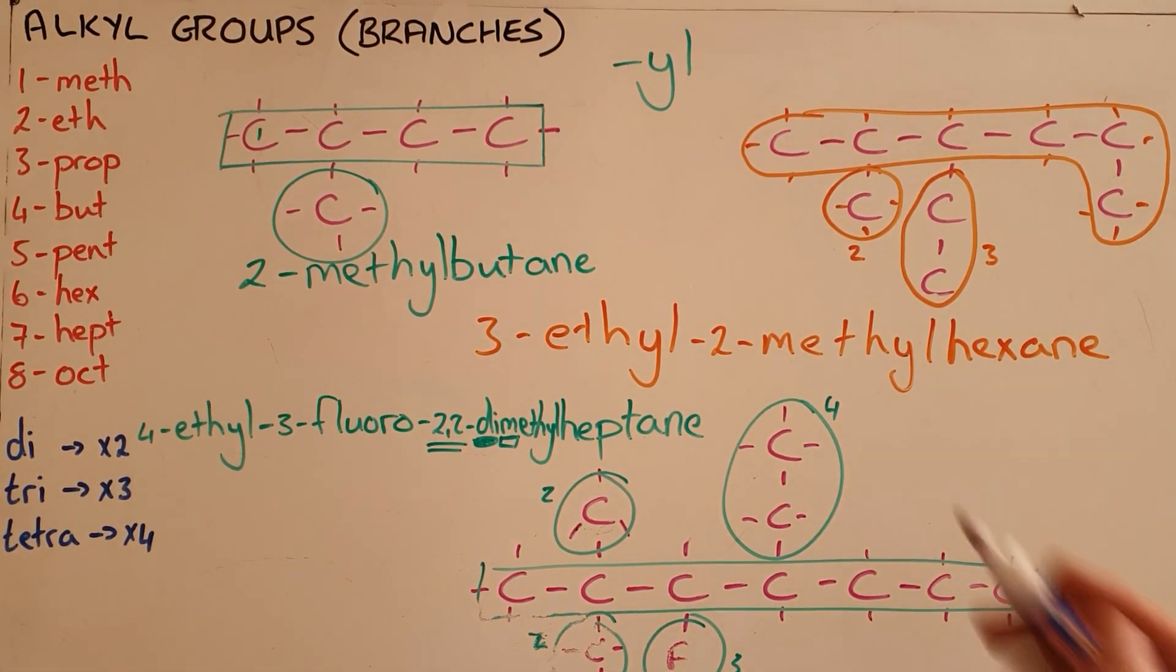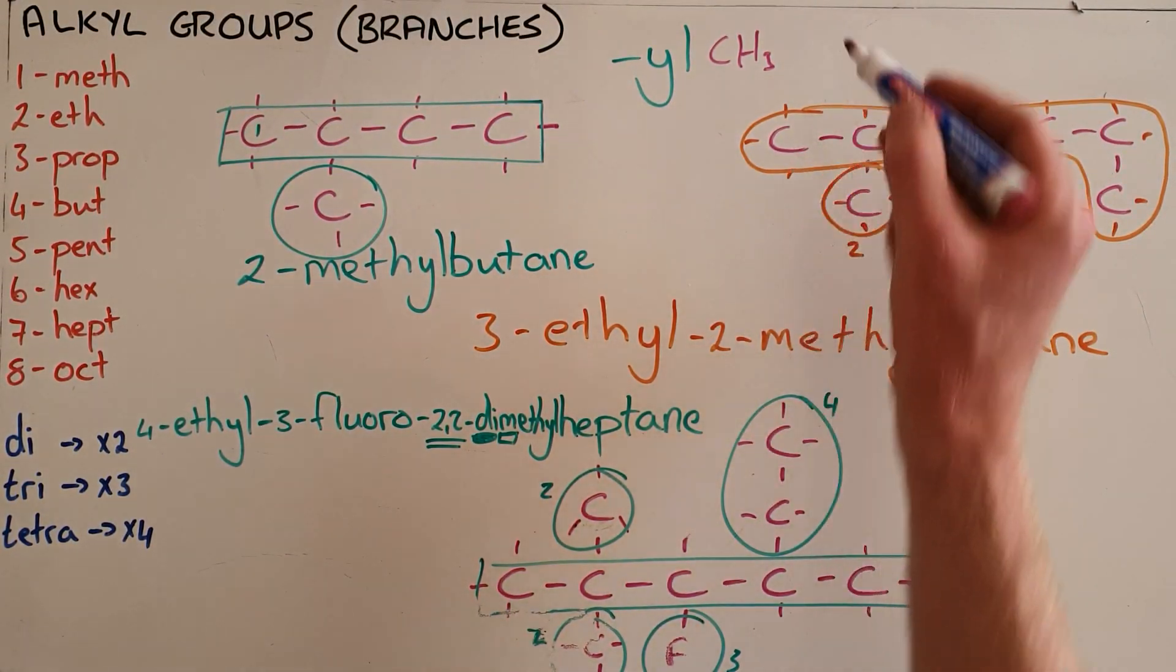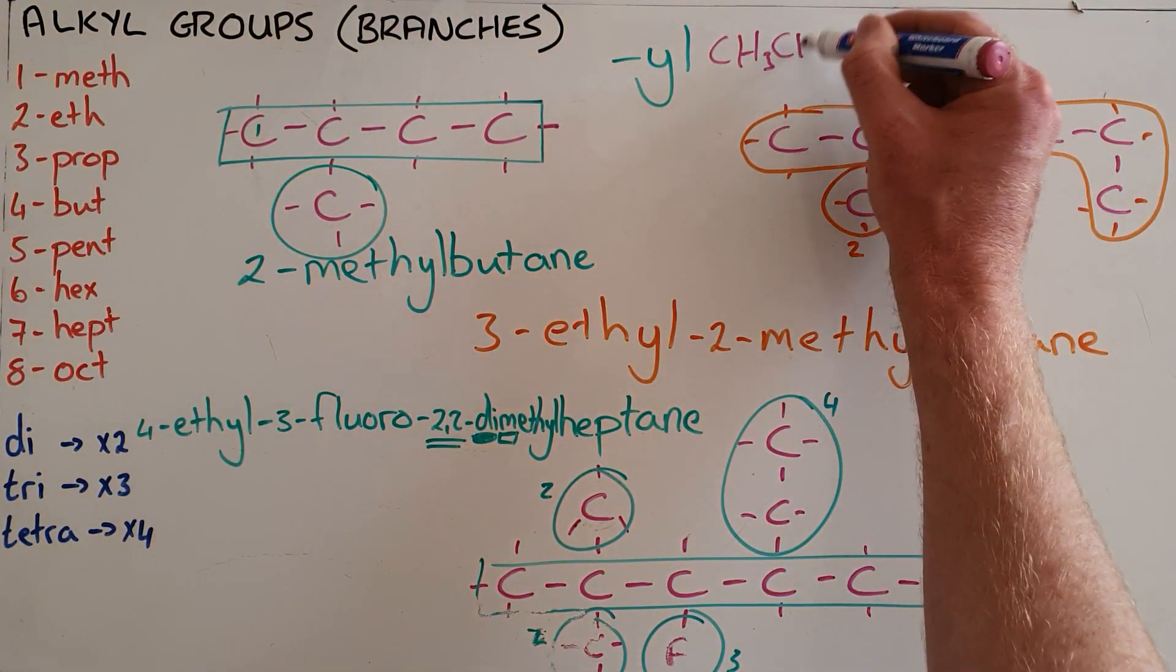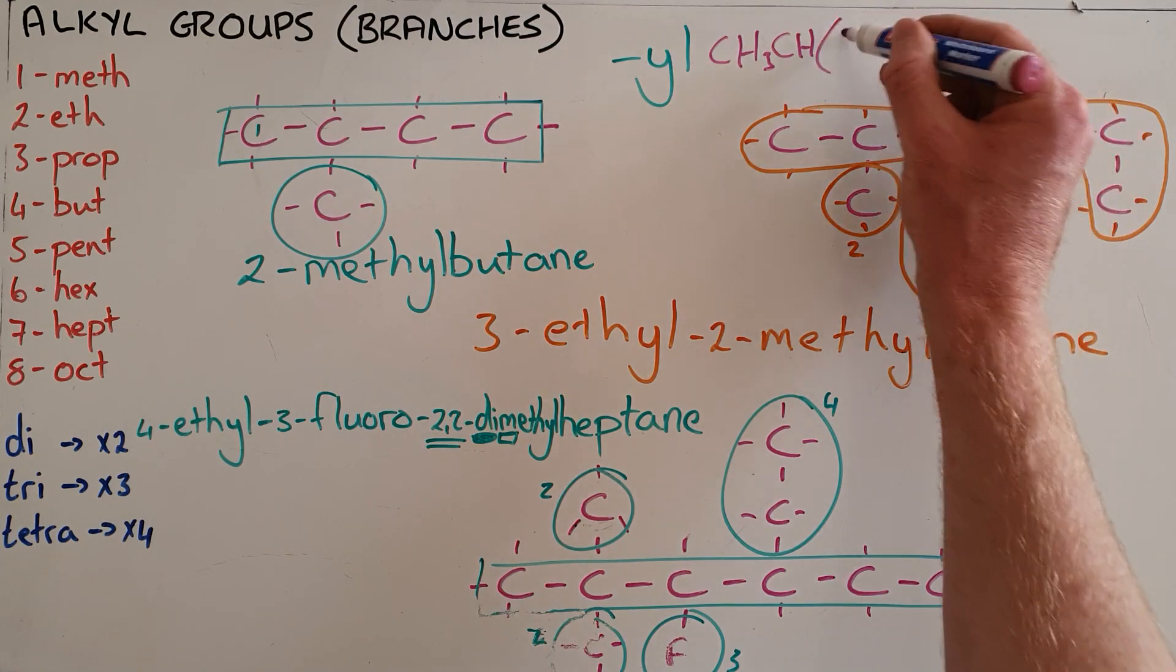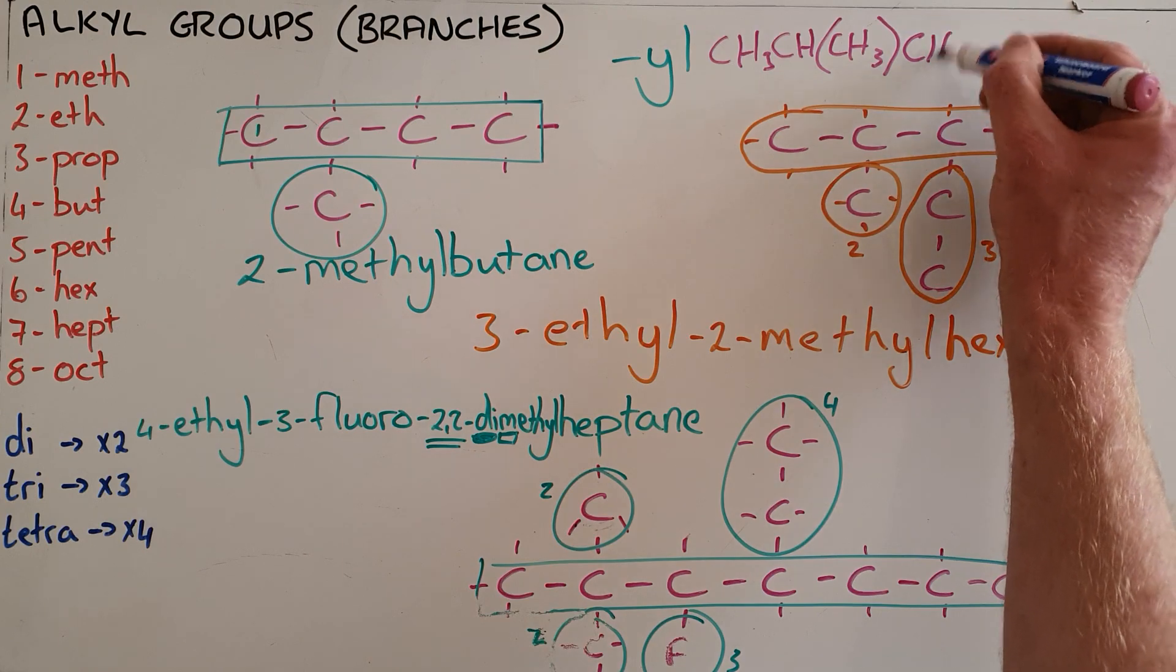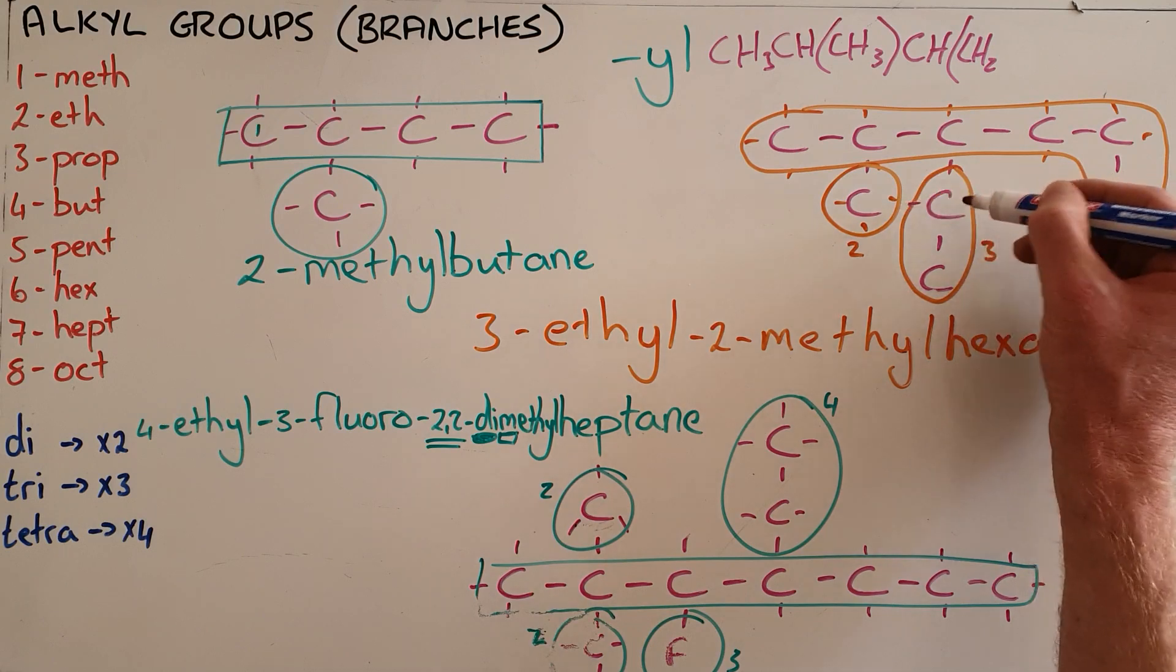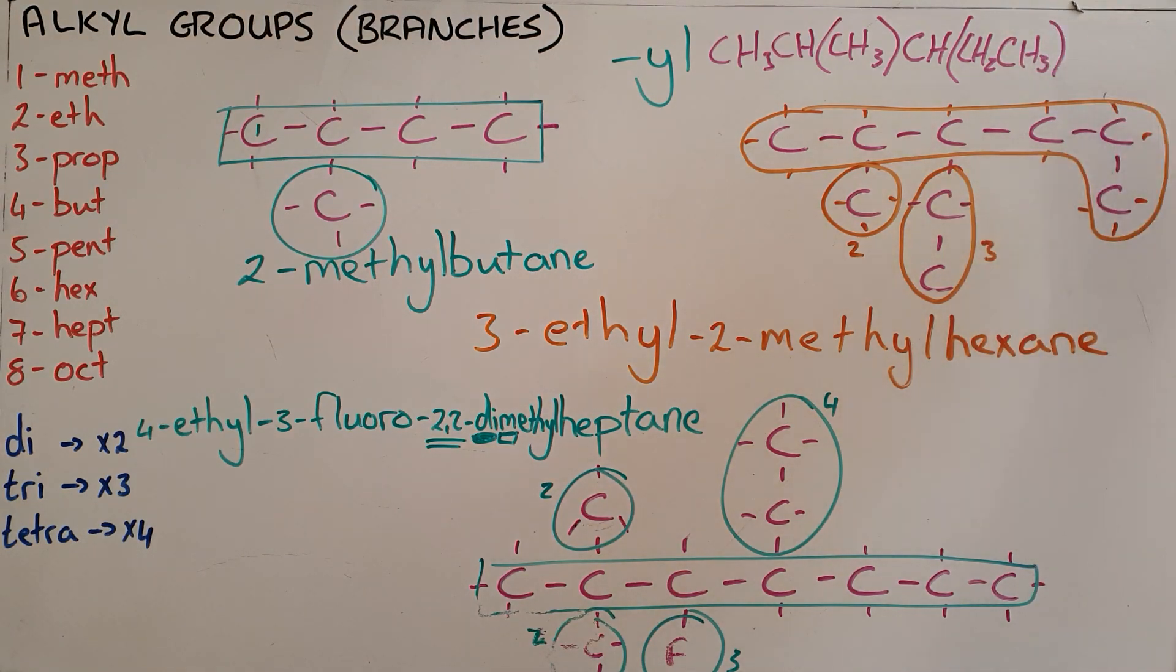The last thing to note here is that in the condensed structural formula, branches are written in brackets. So this molecule here would be CH3 followed by a CH, followed by a CH3 branch which is in brackets, followed by another carbon that is attached to a single hydrogen, followed by a branch that is a CH2 molecule, followed by a CH3 and then a CH2 molecule, another CH2 molecule and a CH3 to end that. So branches in condensed structural formula are written in brackets.